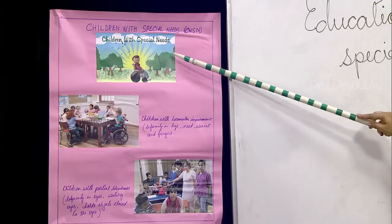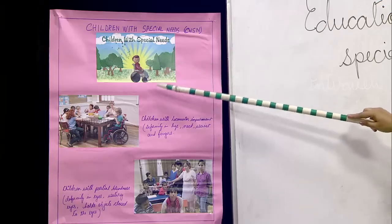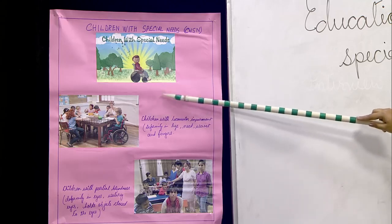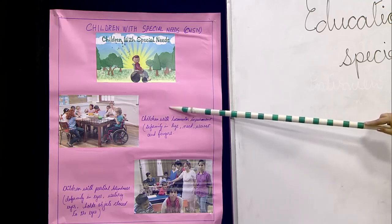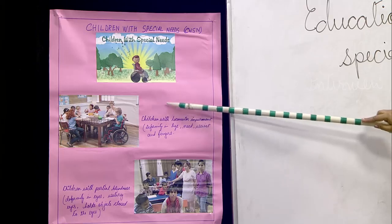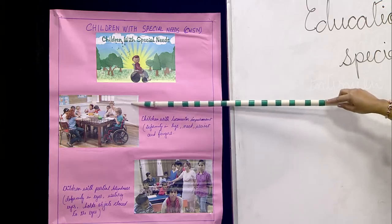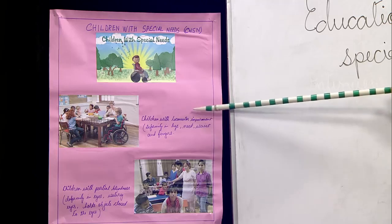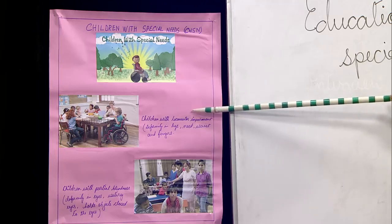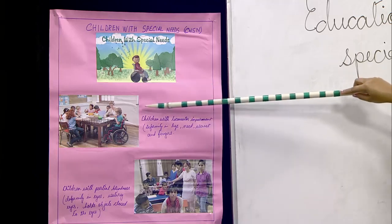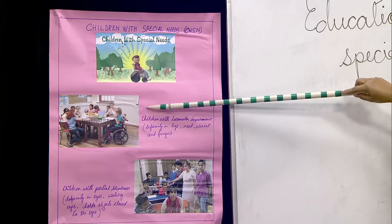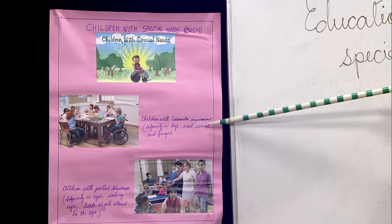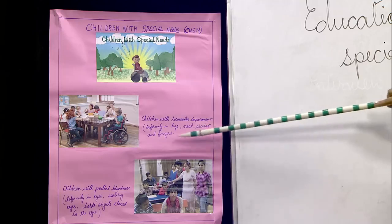In this picture I have brought for you some pictures related to the different disabilities of the children. For example, in this picture I am trying to show you the children with locomotor impairment. The main features of children with locomotor impairment is deformity in their legs, neck, waist, and fingers.